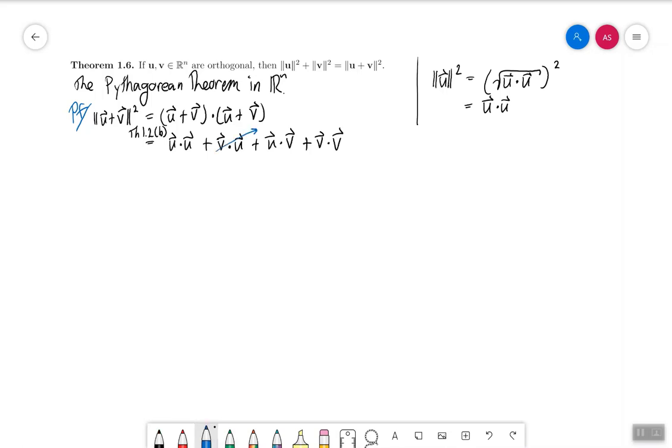But this guy here, v dot u, and this guy here, u dot v, are both 0. And that's because u and v are orthogonal.